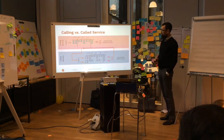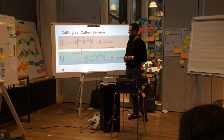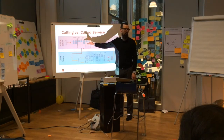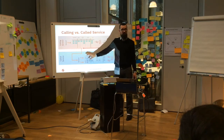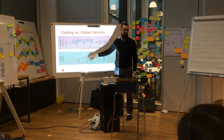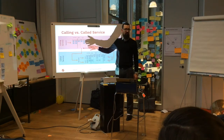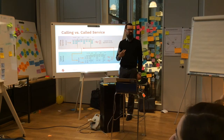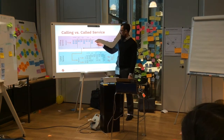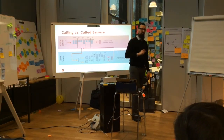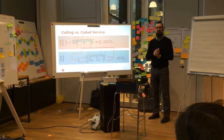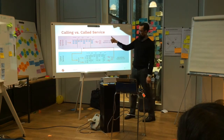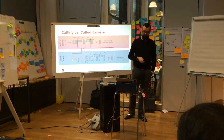Another thing we need is the definition of calling and called service. Imagine you're in product development and need some legal advice - you would be the calling service and you call your legal advisor. At Lotto24, before they launch something new, they need legal advice and approval. So you have a dependency - before you finish that work and launch it, you call the legal department and say 'we need this legal review, please prepare it upfront.' The calling and called service are two important things in a Kanban system.